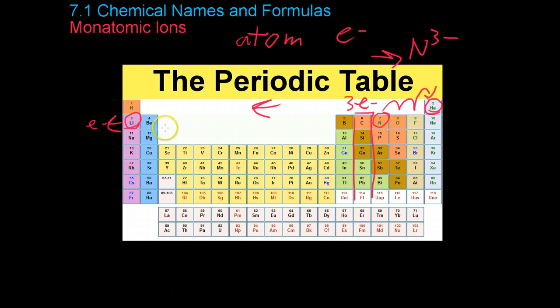And once you get away from the main group, when you get in here with the D-block, it's not so simple. Many of these will lose different numbers of electrons depending on the situation to become various ions. Iron, for example, can lose either two or three electrons to become an Fe2+ cation or it can also be an Fe3+ cation. So in here it gets a bit ambiguous with many of the elements as to a certain ion they become.